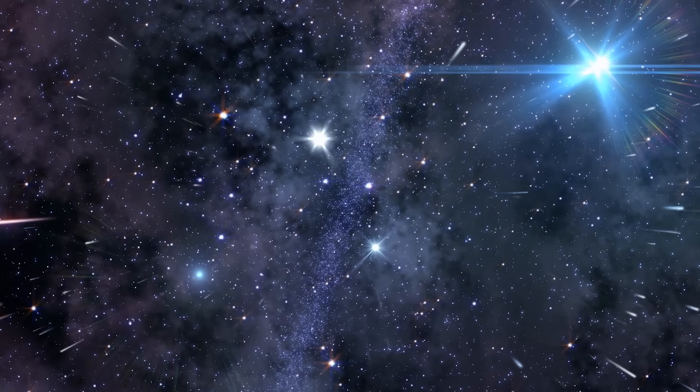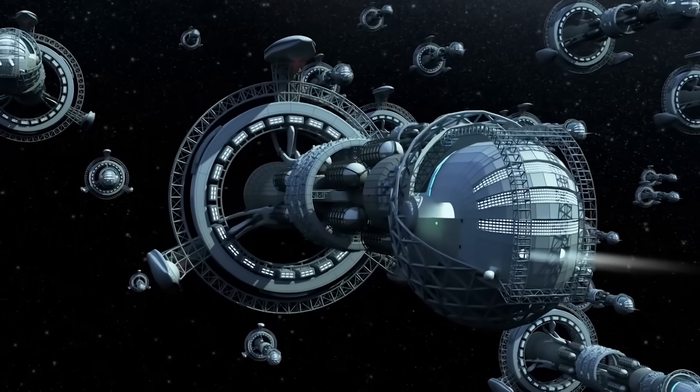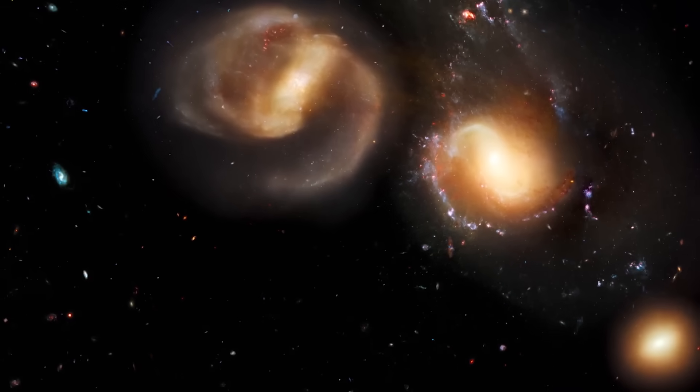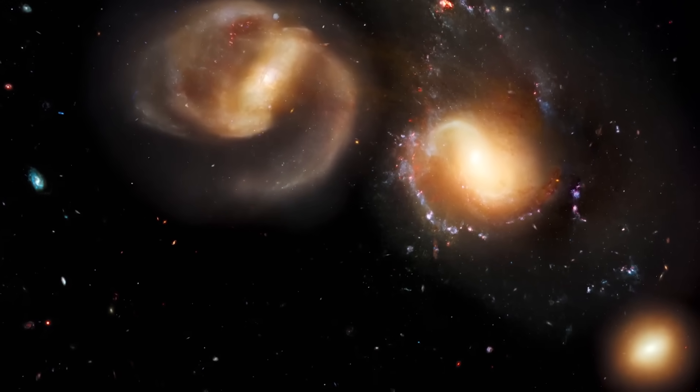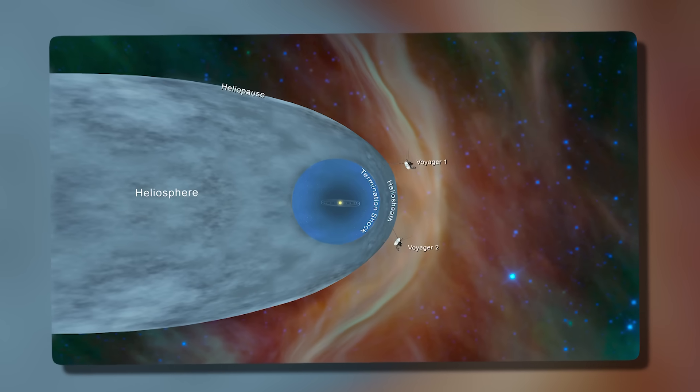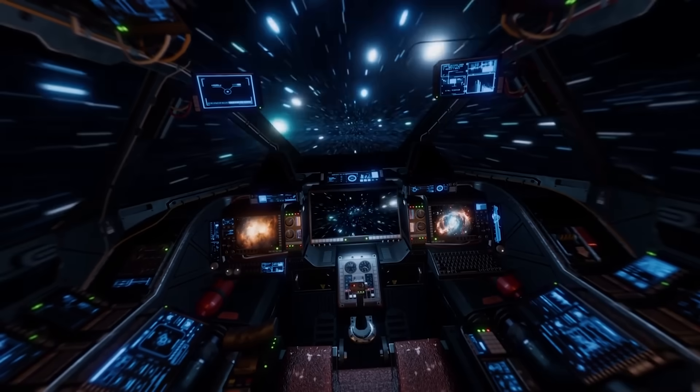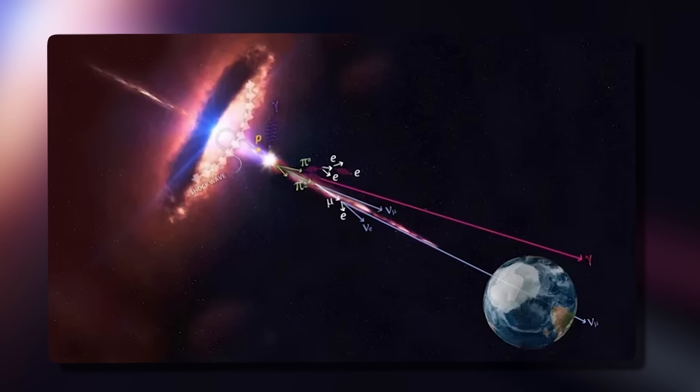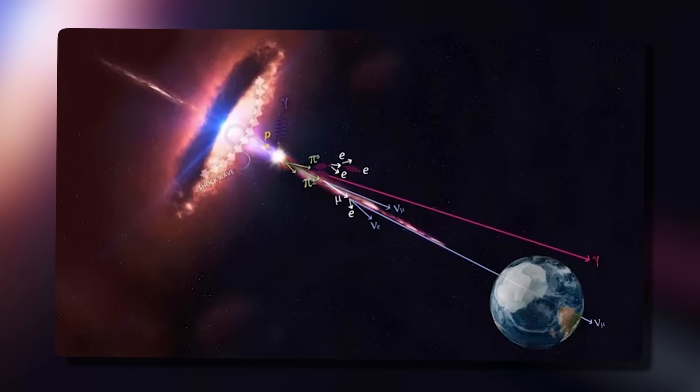The synergy of these instruments could provide humanity with the most comprehensive data set ever collected on a non-solar origin object. The importance of 3I Atlas extends beyond its physical characteristics. Its journey represents a bridge between star systems, a messenger carrying material from another world into the heart of our own. Every molecule it carries was forged in alien conditions, shaped by the chemistry and radiation of a distant sun. As it evaporates near our star, those same molecules will become part of the solar wind, dispersed into the heliosphere and carried outward toward the edges of the solar system. In a poetic sense, the interstellar traveler will merge with the very force that sustains life on Earth, its essence scattered among the photons and charged particles that bathe our world each day.